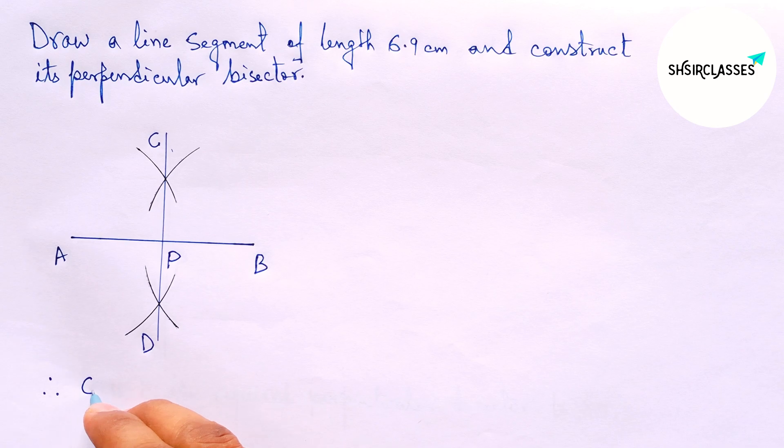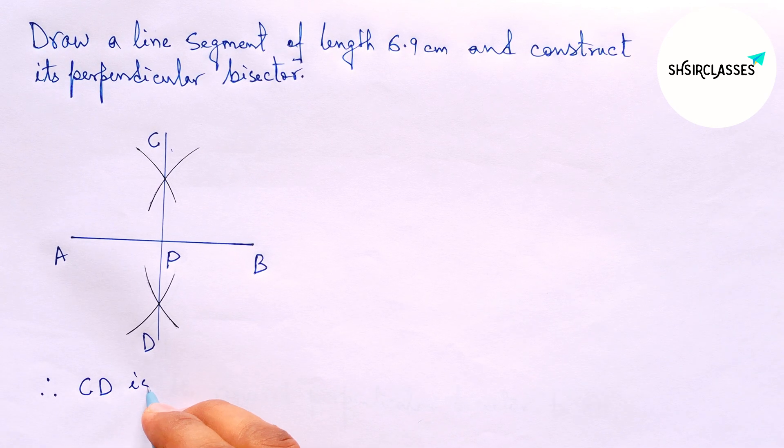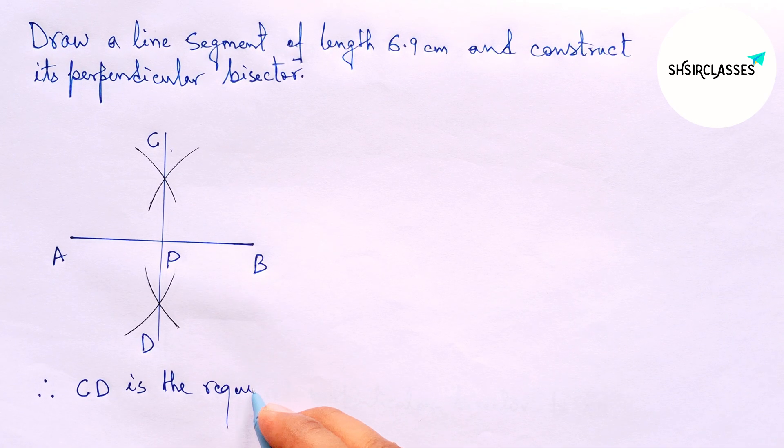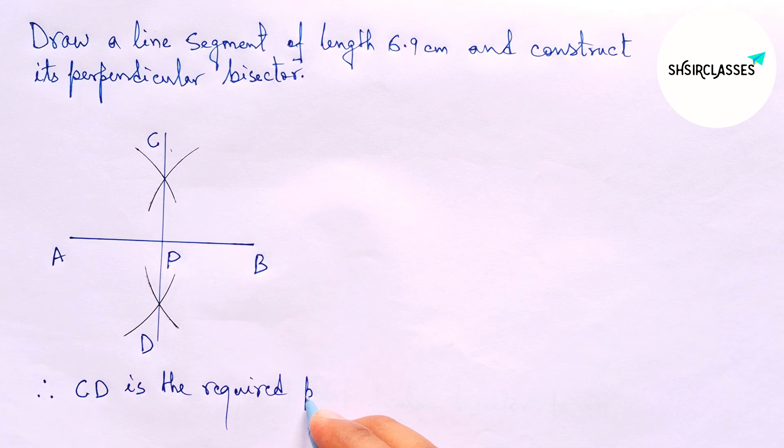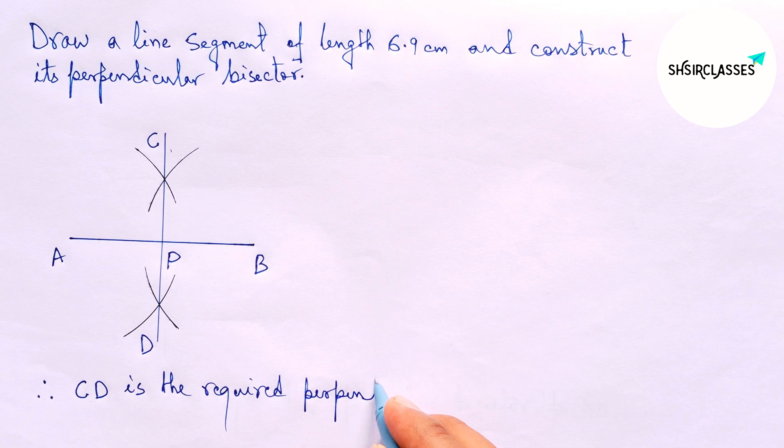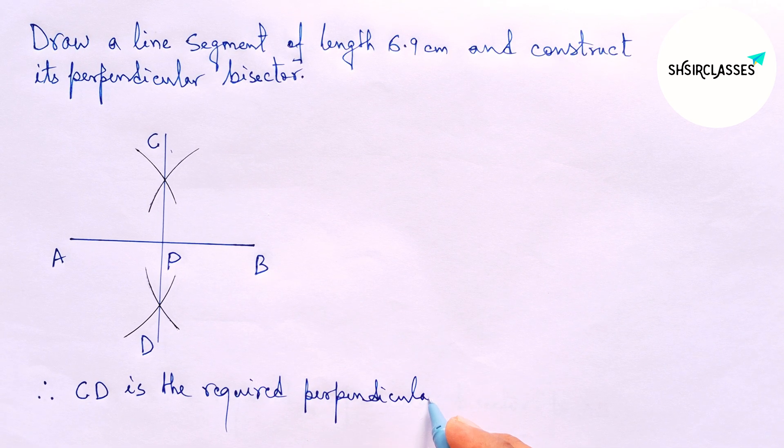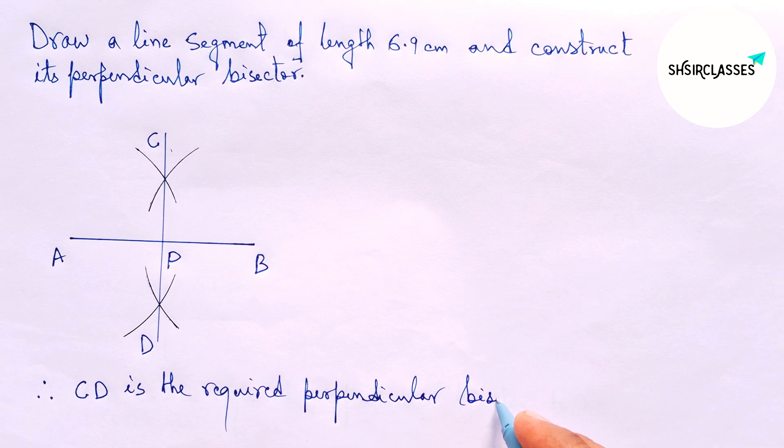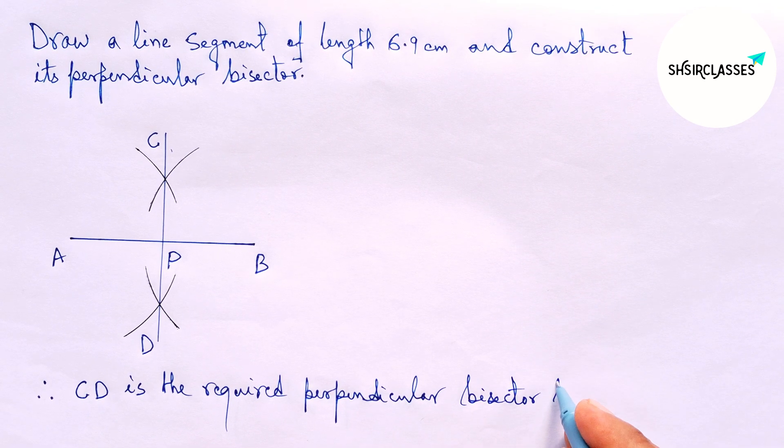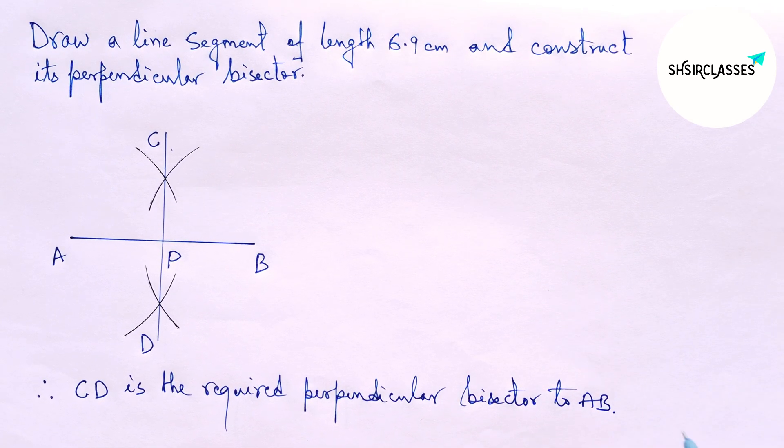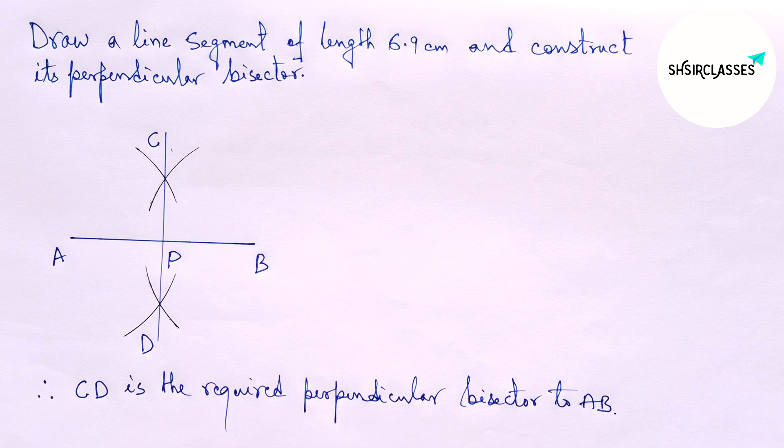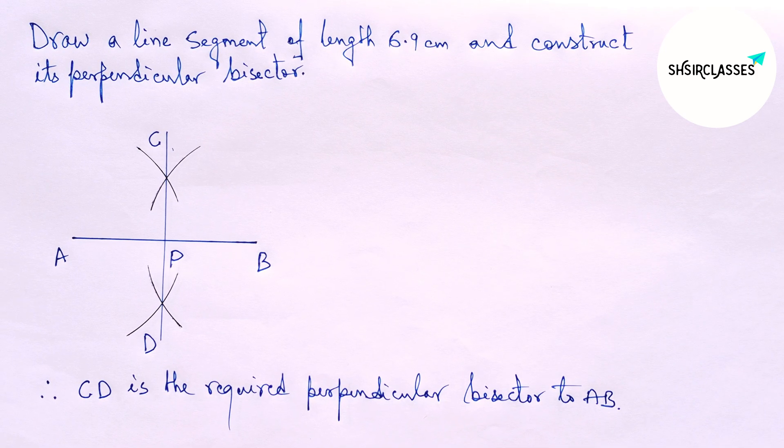Therefore, CD is the required perpendicular bisector to the given line AB equal 6.9 centimeter. By this way you can construct a perpendicular bisector to a given line in easy way. So that's all, thanks for watching. If this video is helpful to you, then please share it with your friends.